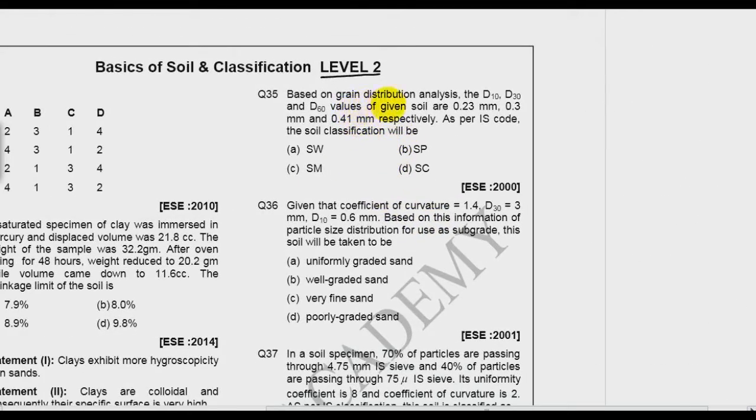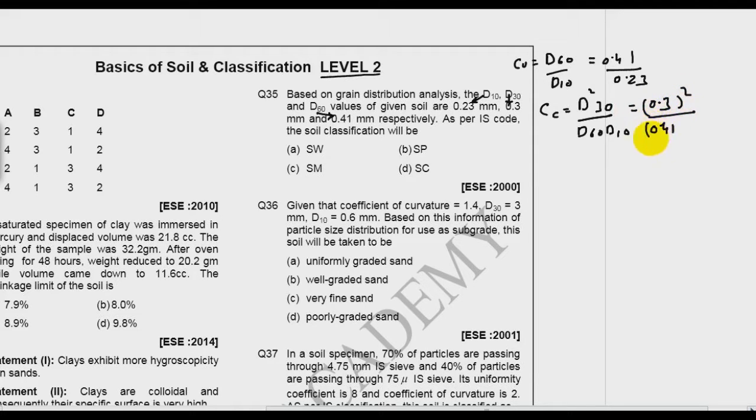Next question based on grain distribution analysis. d10, d30 and d60 are given. So this is my d10, this is my d30 and this is my d60. We will find Cu. What is Cu? d60 by d10. So what you will get is 0.41 divided by 0.23. And we will get Cc which is d30 squared over d60 d10. D30 is 0.3 squared divided by d60, so 0.41, and d10 is 0.23. If you simplify both, you will get Cu as 1.78 and Cc as 0.95.